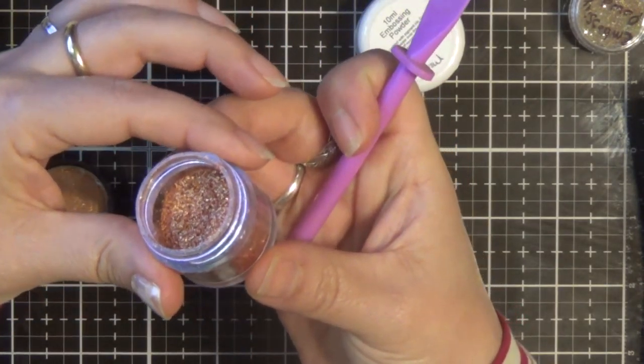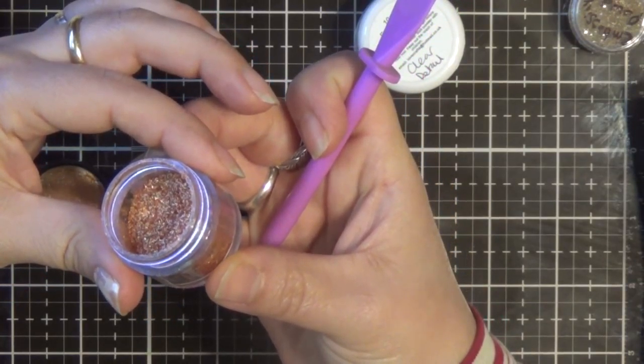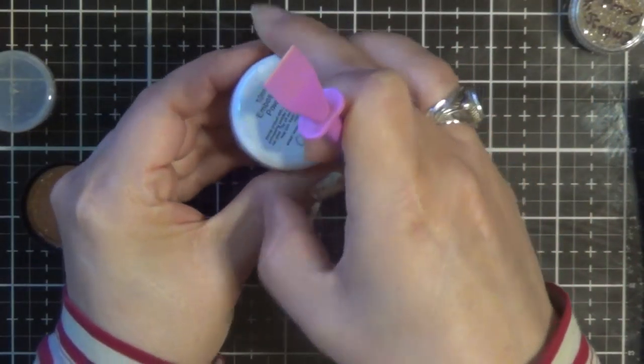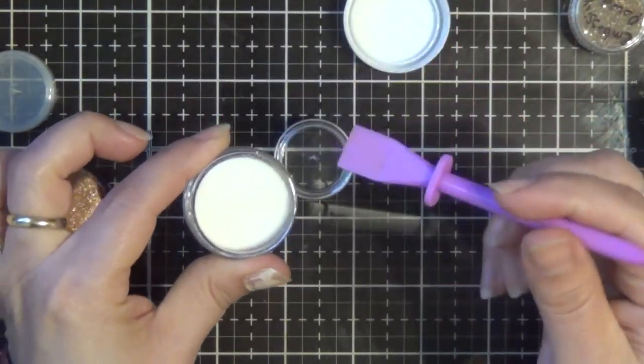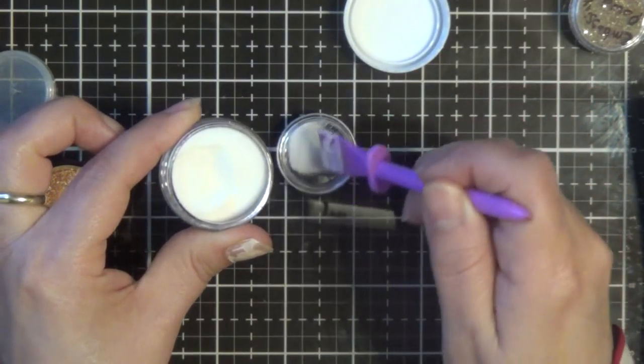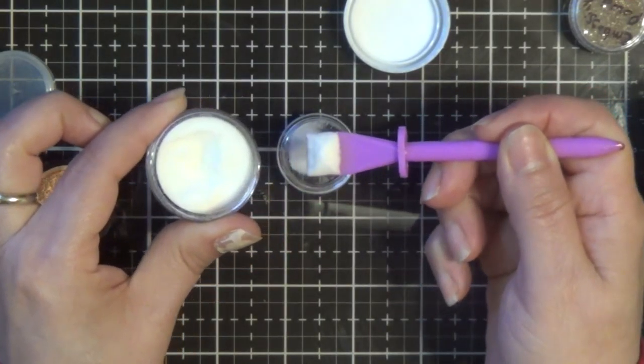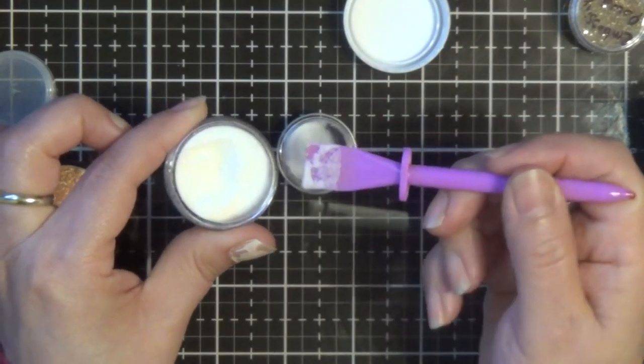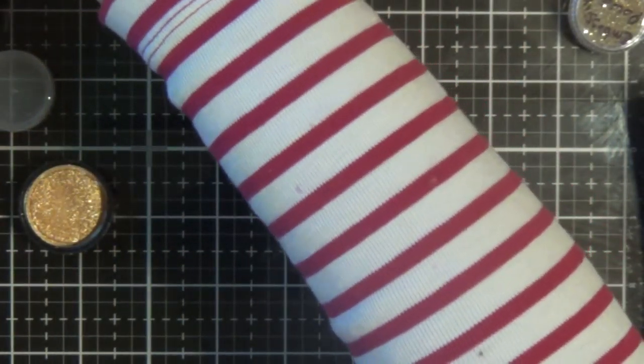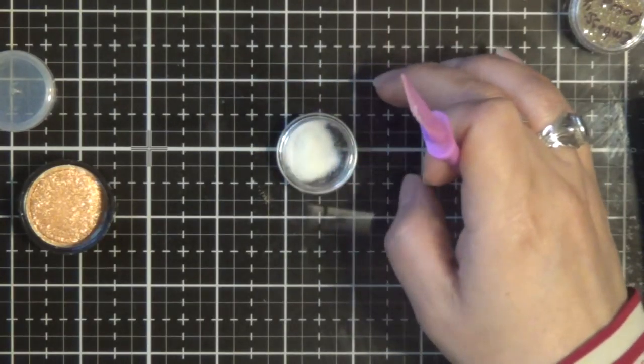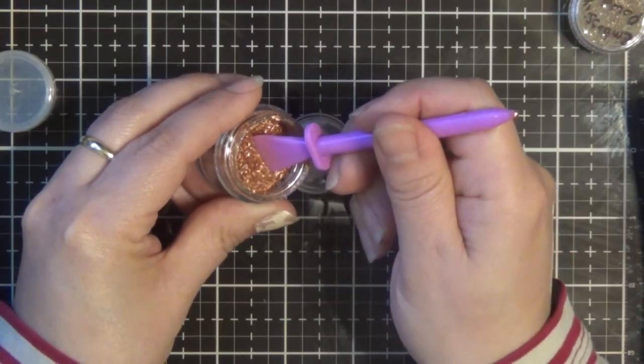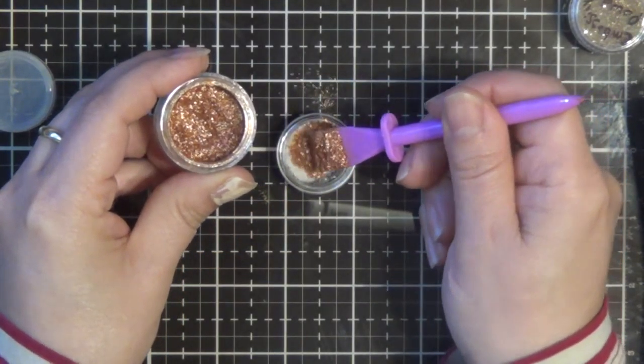This one here is Sparkle Copper from Jacquard. Just going to scoop some in. And like I mentioned, supposedly, I haven't tried it myself, you can add glitter, fine dust glitter, to your mixes also.